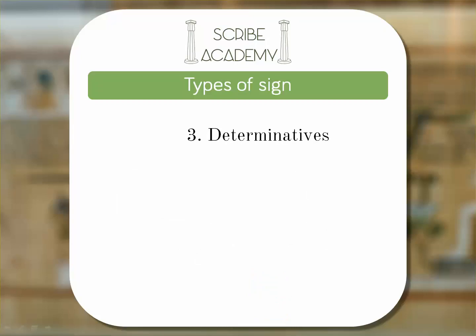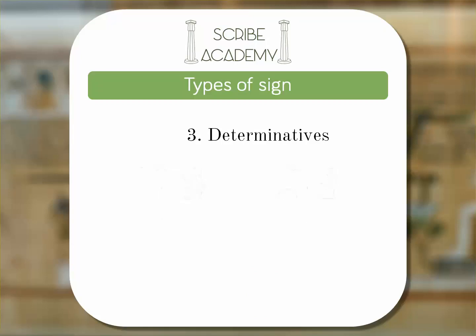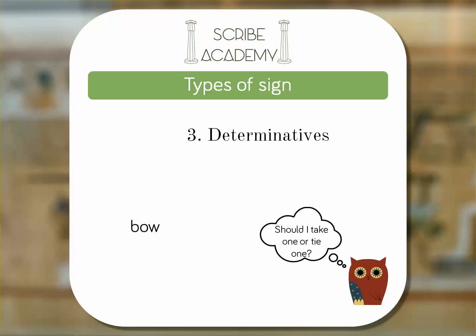The third type, determinatives, don't have a sound or any translatable value — they're used to help show the meaning of a word. For example, the word for man has a picture of a man at the end; the word for woman has a picture of a woman after it. If we were to do this with English, you might see something like this: there's more than one use for the word — is it 'bow' or 'bow'?